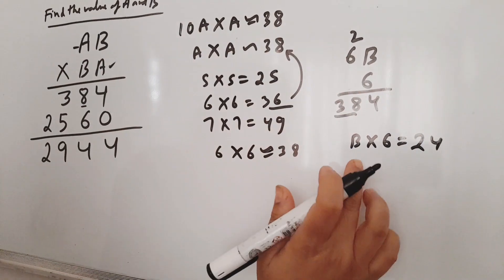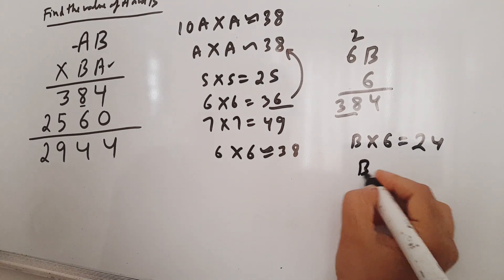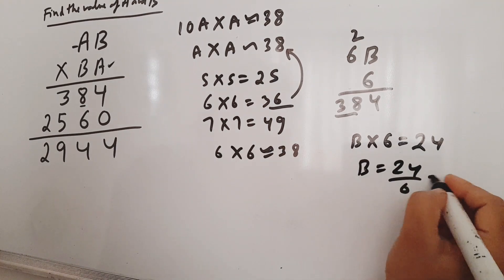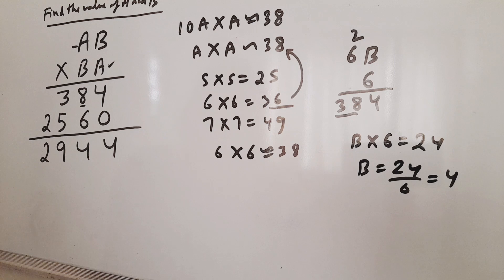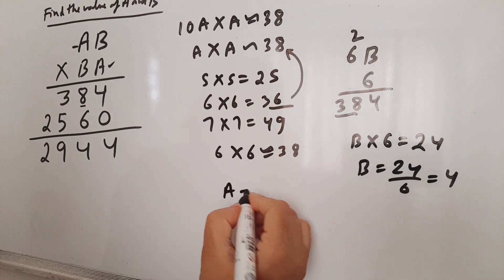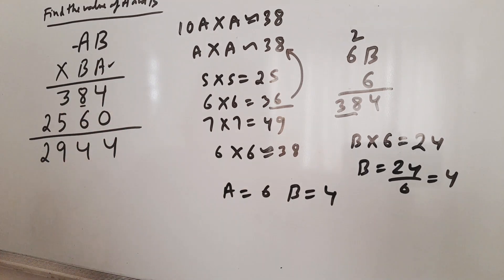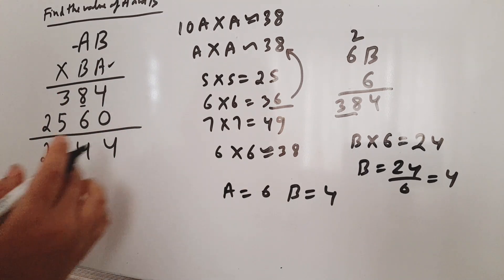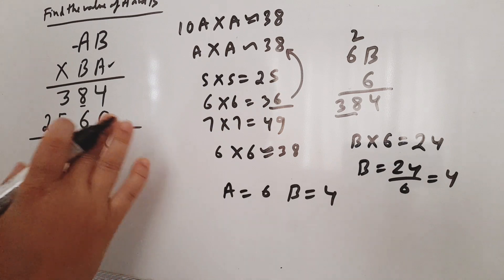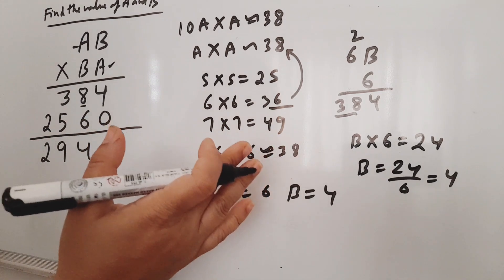Now we can get the value of B. 6 times B equals 25, so 6 times 4 equals 24. B equals 4. Then quickly you can solve this kind of puzzle.